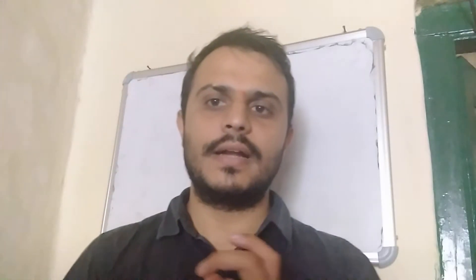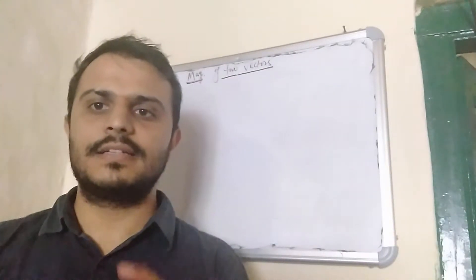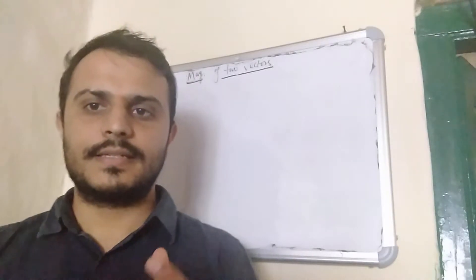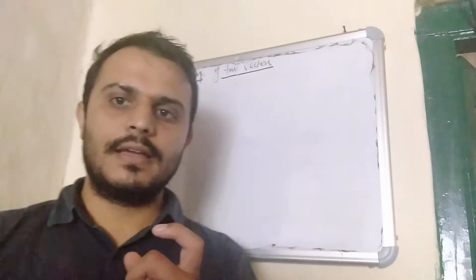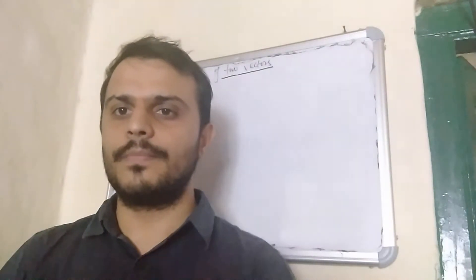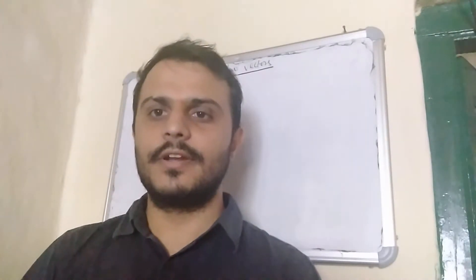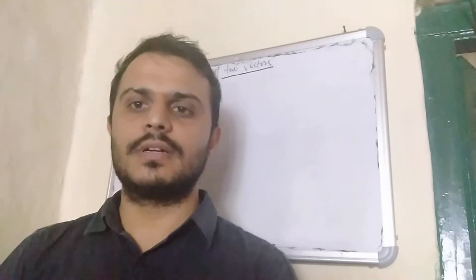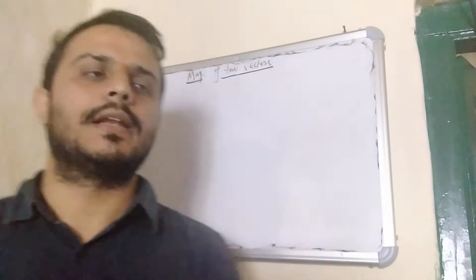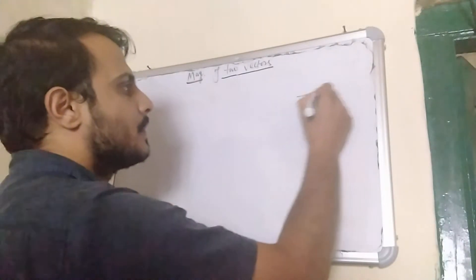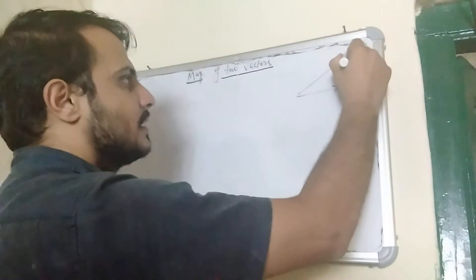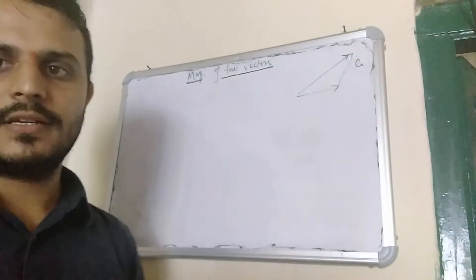We know that vectors are quantities which have some magnitude, which have some direction, and they also follow vector algebra. For example, if we have to add two vectors then we use the triangle law. In the last videos, I have already told how we use the triangle law to find out the resultant. This is one vector, this is another vector, and the third side that closes the triangle gives us the resultant.